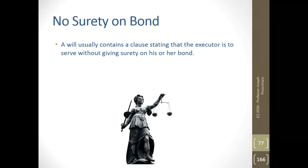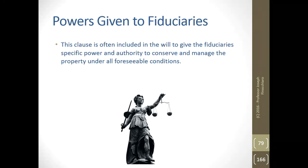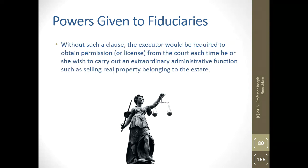A will usually contains a clause stating that the executor is to serve without giving surety on his or her bond. A surety is when two persons or a surety company stand behind the executor's obligation. A bond is a promise by the personal representative and sureties, if any, to pay the amount of the bond to the probate judge if the representative's duties are not faithfully performed. A powers clause is often included to give the fiduciary specific power and authority to conserve and manage property under all foreseeable conditions — without such a clause the executor would be required to obtain court permission each time they wish to carry out extraordinary administrative functions such as selling real estate.